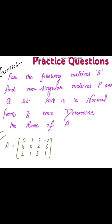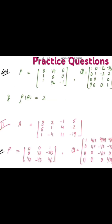Find non-singular matrices P and Q such that PAQ is in normal form, and hence determine the rank of the given matrix A. The green color matrix is given to you and you need to find the non-singular matrices P and Q such that PAQ is in normal form. The solutions are also given to you — you may practice this.